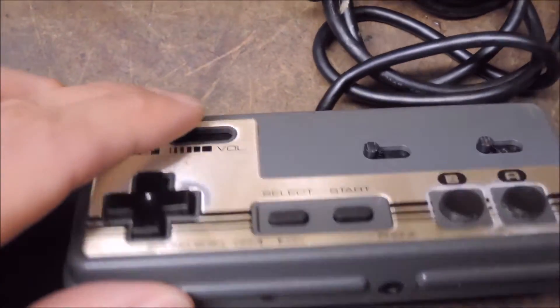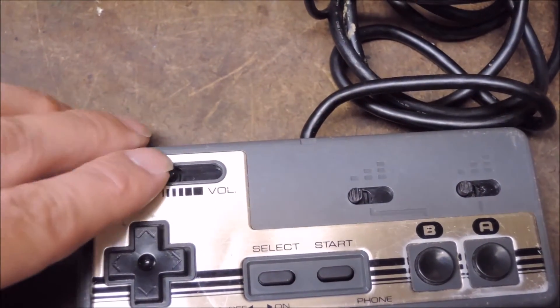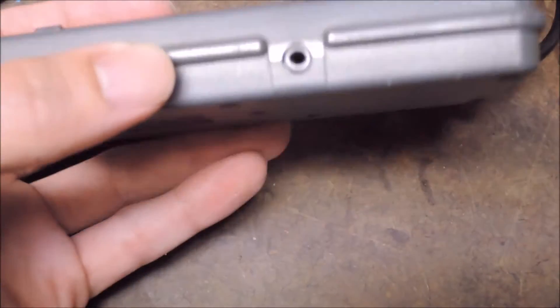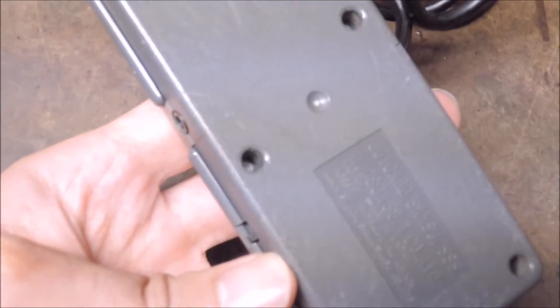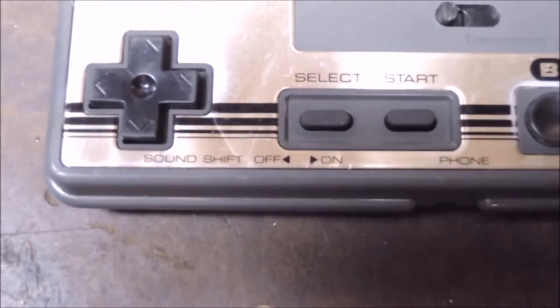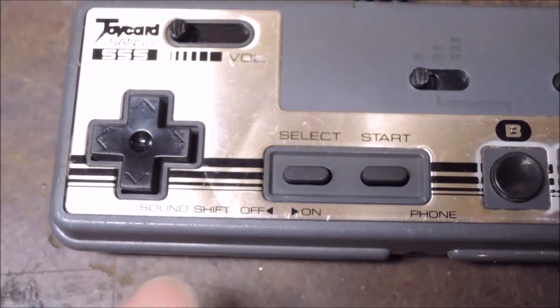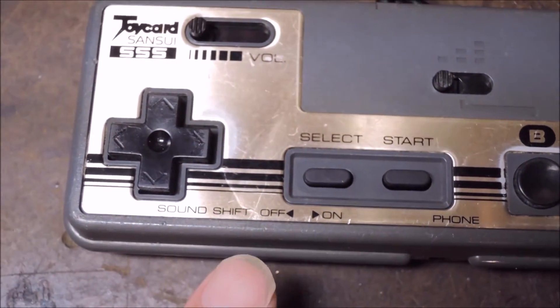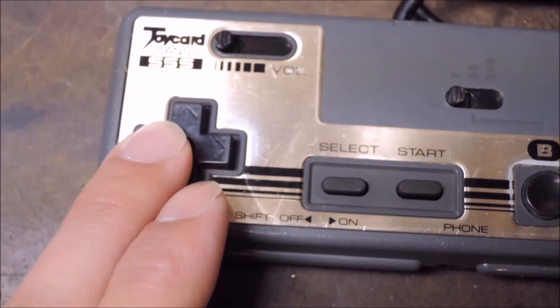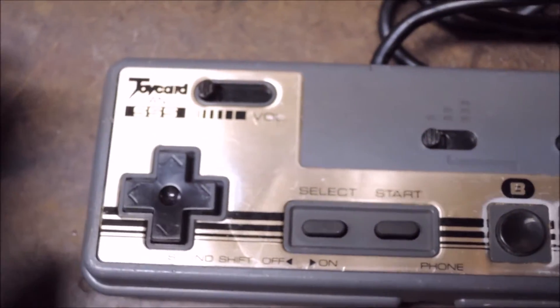You can actually plug in headphones to this controller, and you have an adjustable volume knob here which I'll need to clean up. You also have stereo. On the front you can see sound shift. Basically what sound shift does is when it's on, when you hit left you'll get sound in your left headphone and when you hit right you'll get sound in your right headphone. It's a weird stereo mix which is interesting but also annoying.